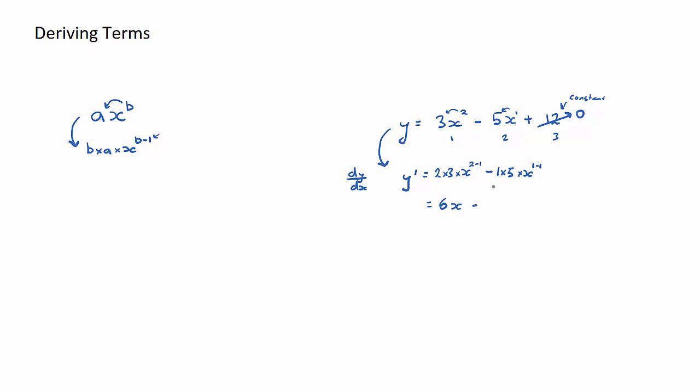Now the next term, 1 times 5 is 5. x to the power of 1 minus 1 is 0. Now let's talk about this for a second.